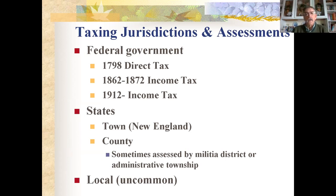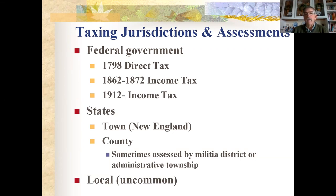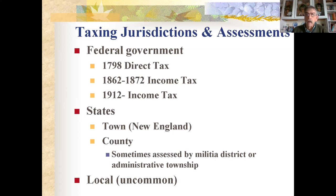Different jurisdictions assess taxes. The federal government had a 1798 direct tax — a few eastern states' records survived in the National Archives. From 1862 to 1872 there was an income tax to pay for the Civil War; those assessments can be found on Ancestry. You really had to own a lot to be taxed under that — regular farmers were often not taxed, so it was a pretty high-end assessment. Then from 1912 to date we have the modern income tax.